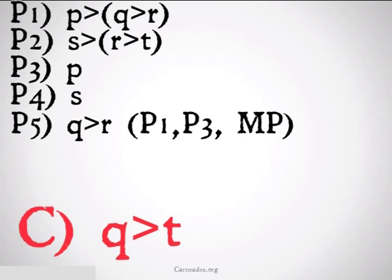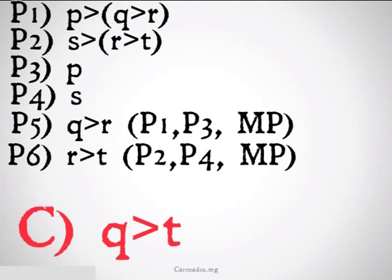I should also be able to see that from premise 2 and premise 4, I have once again the same situation. I have s, the first part of an implication, and s implies r implies t. So I can once again conclude that second part of my implication up in premise 2. r implies t from premise 2, premise 4, modus ponens once again.